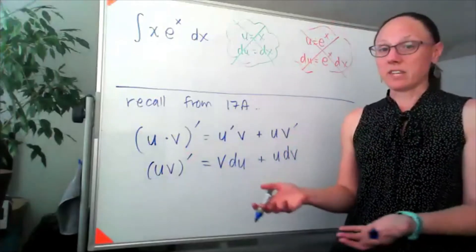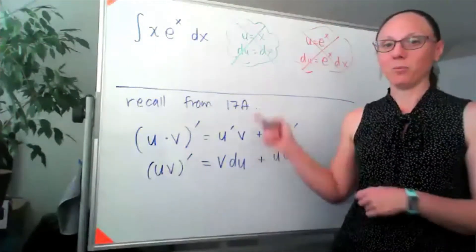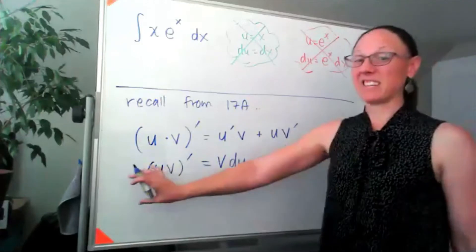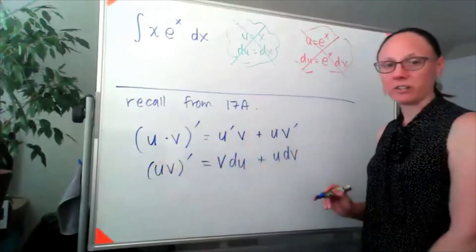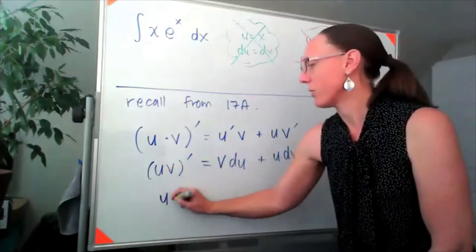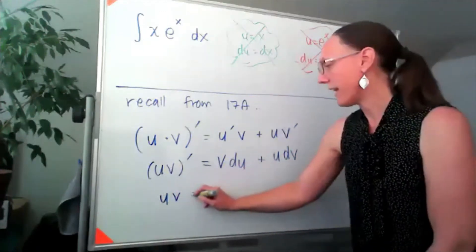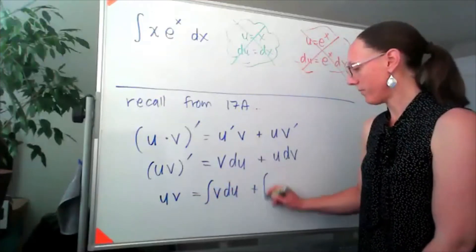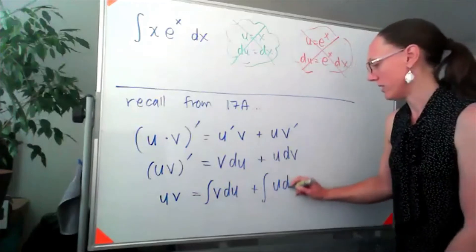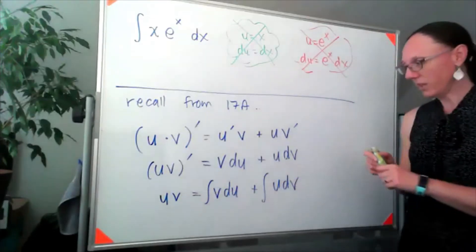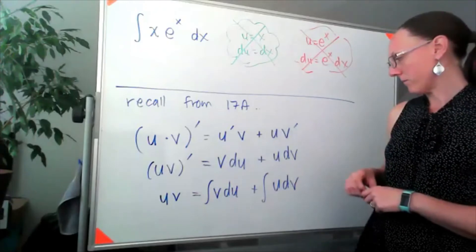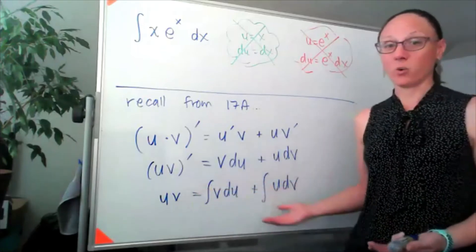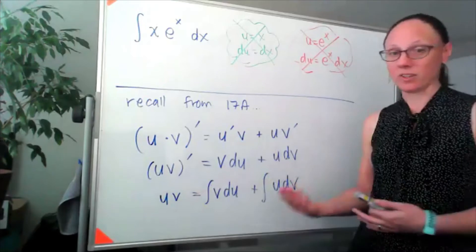The theme of 17B so far has kind of been: we were doing derivatives in 17A, we're doing antiderivatives in 17B. So if we take the antiderivative of this entire equation, on the left-hand side I'll just be left with u times v. And over here, taking the antiderivative, I can write that as an integral: v du plus integral of u dv. I think I got all those pieces right.